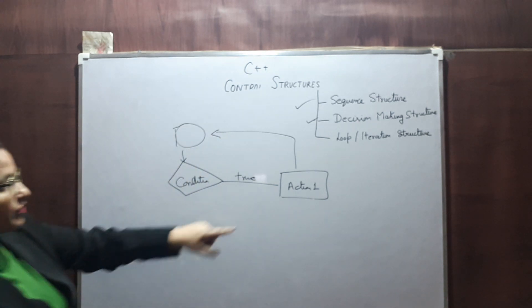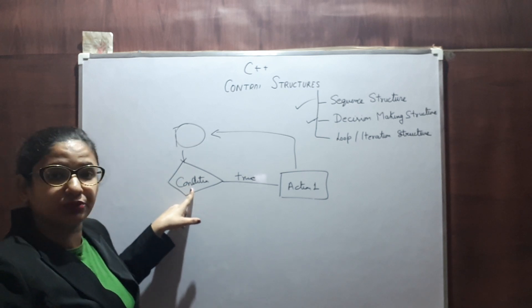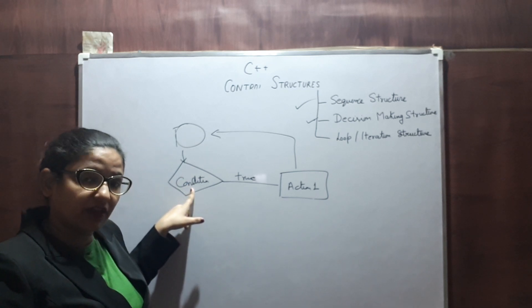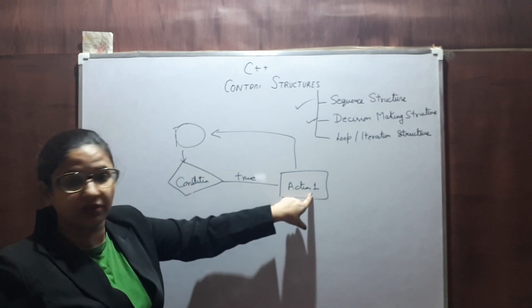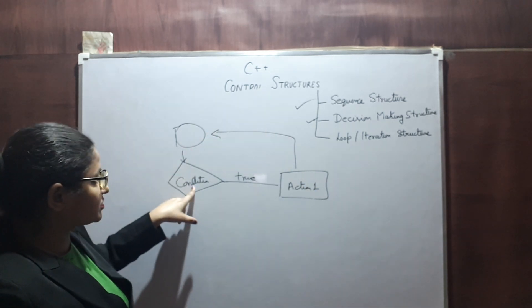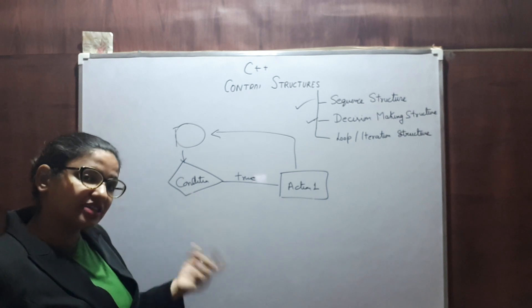And after Action 1 we again go back into the condition state. We again check for the condition. If condition is true, we again perform Action 1. Again we come at the condition point. We again check for the condition.